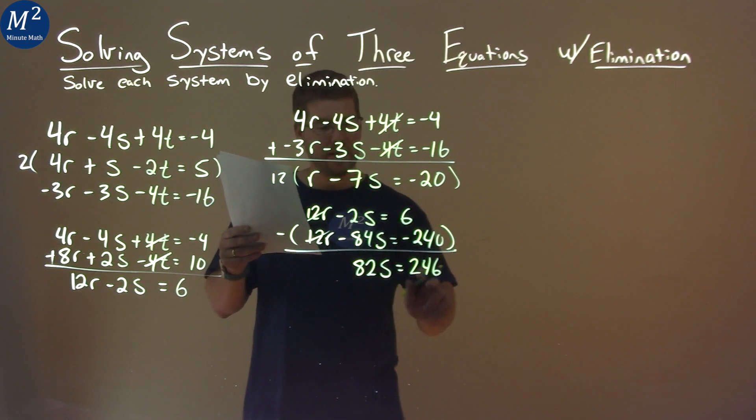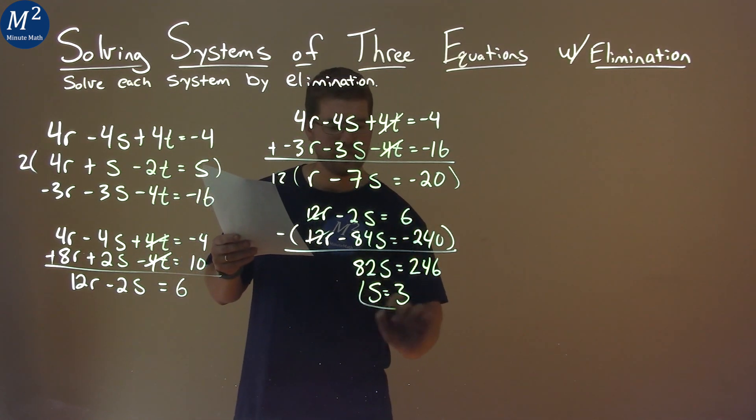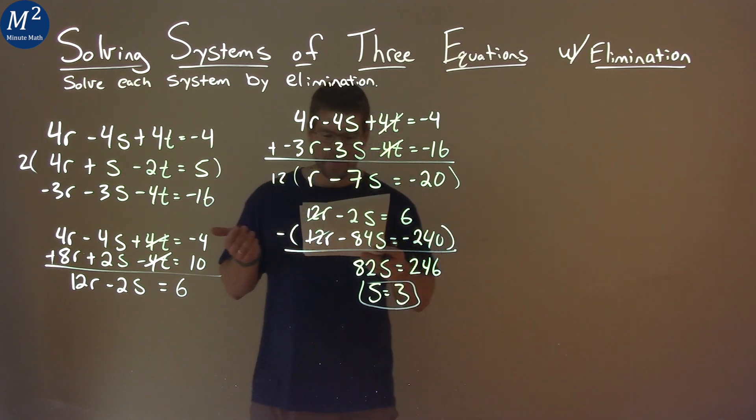Divide both sides by 82, and after all that, s is by itself, and that's 3. So we have s is equal to 3 here.